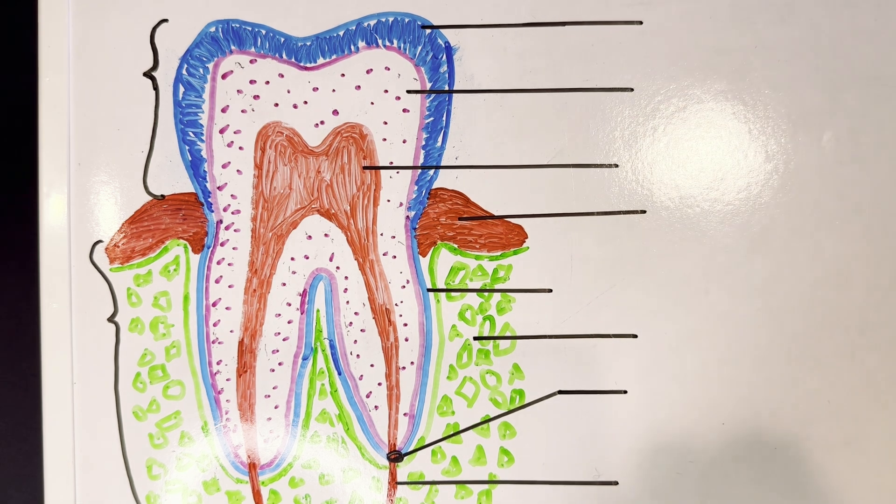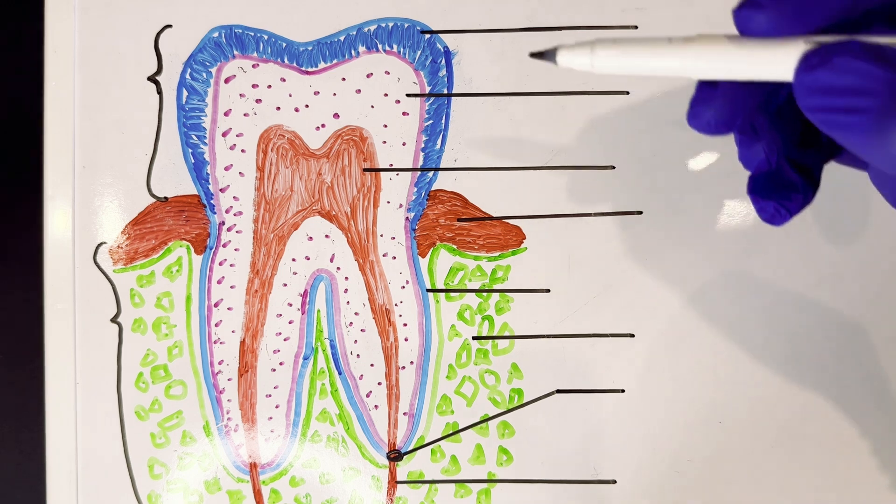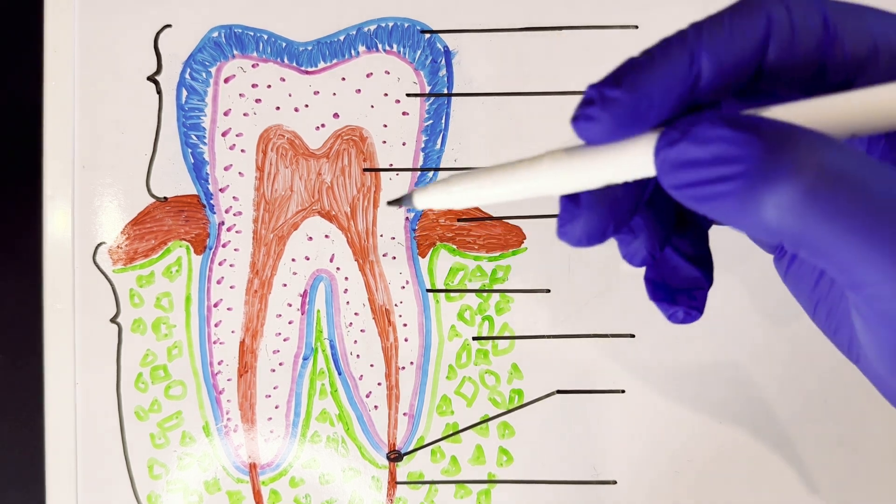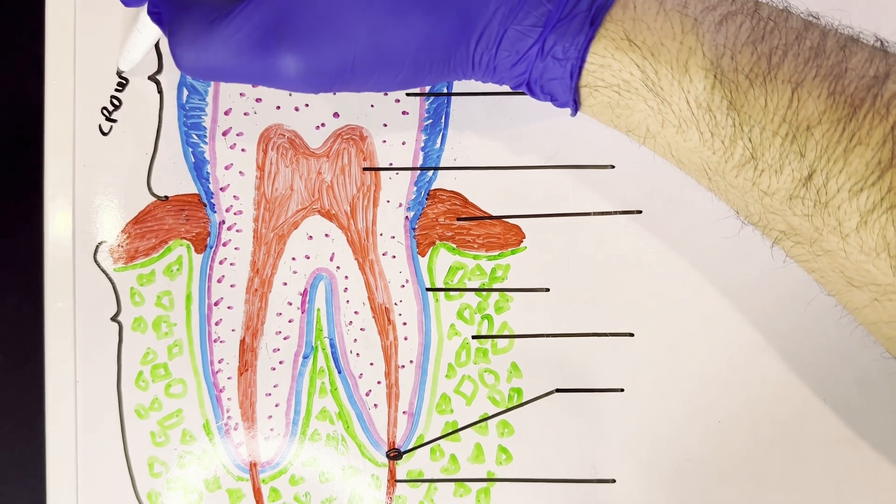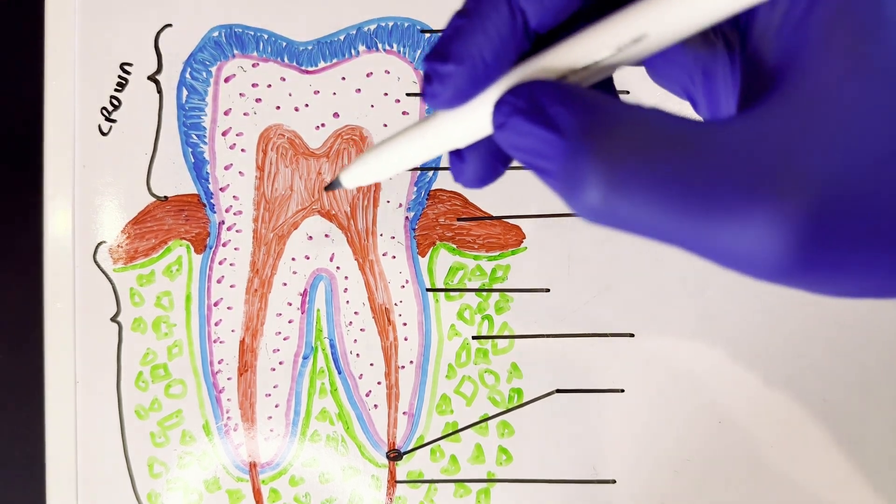So usually we divide our tooth into two distinct parts: the crown of the tooth, so here I'm going to label crown, and the root of the tooth.